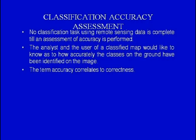After classification, the analyst must make an assessment of the work done — classification accuracy assessment. No classification task using remote sensing data is complete until an assessment of accuracy is performed. The analyst and user of a classified map need to know how accurately the classes on the ground have been identified on the image. In digital image processing, accuracy is a measure of agreement between the standard information at a given location and the information at the same location on the classified image.